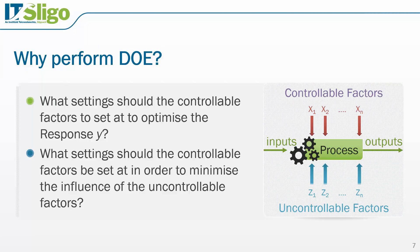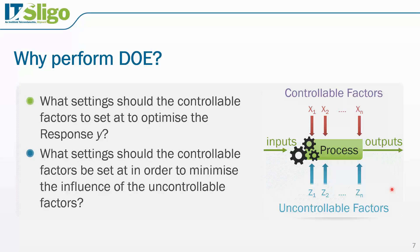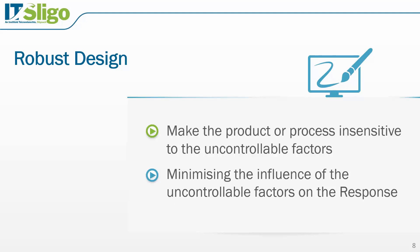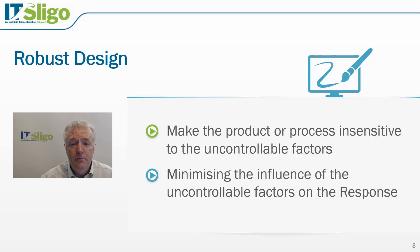We perform experiments in order to find out about the process. In relation to the process, there are controllable factors that we can control ourselves, and uncontrollable factors that we have little or no influence over. We would like to set the controllable factors to optimize the response and minimize the influence of uncontrollable factors. This is often done through robust design, where we make our product or process insensitive to the uncontrollable factors.